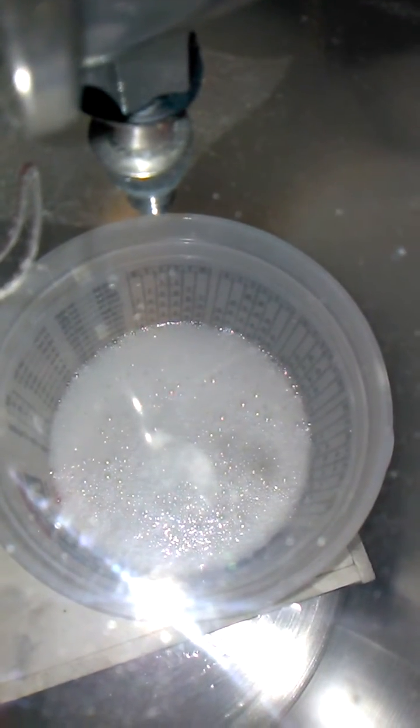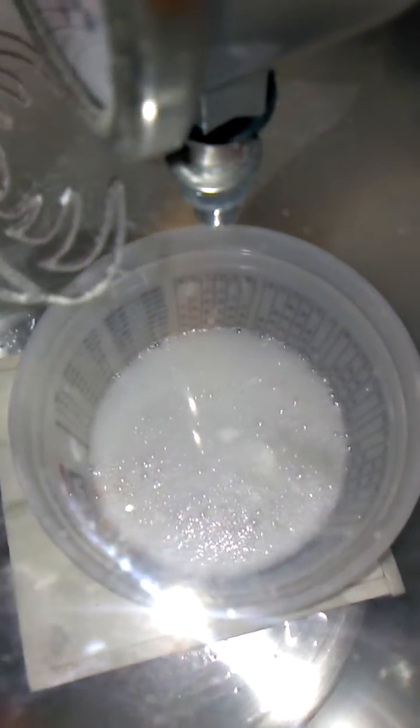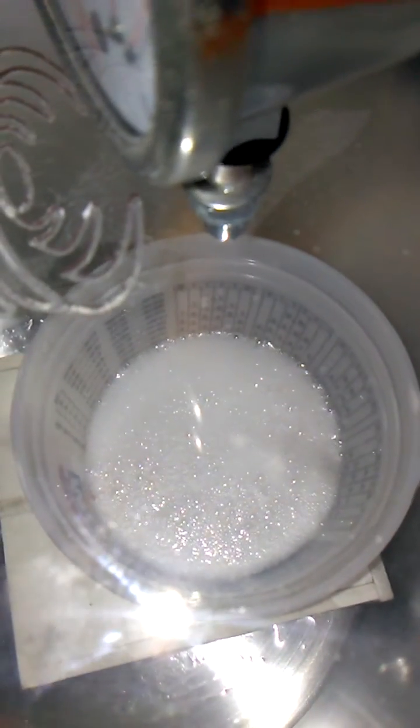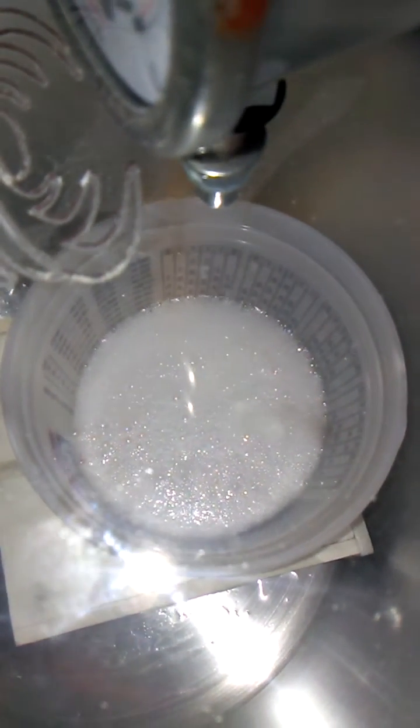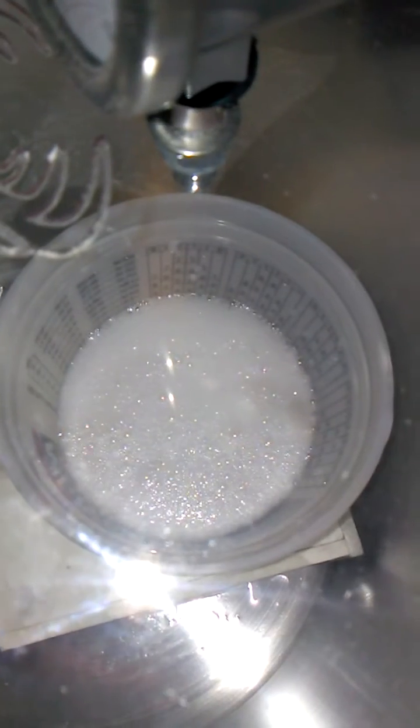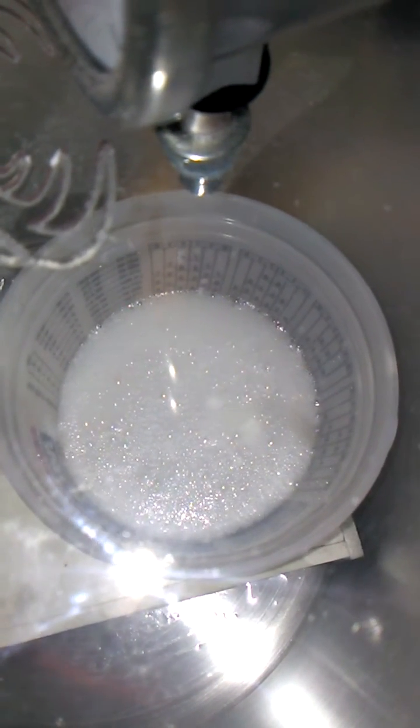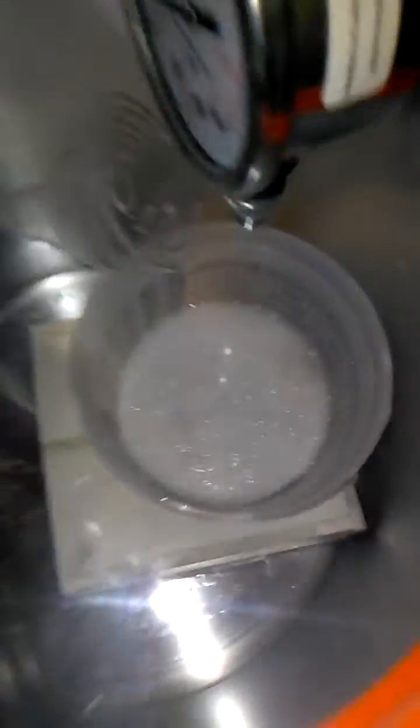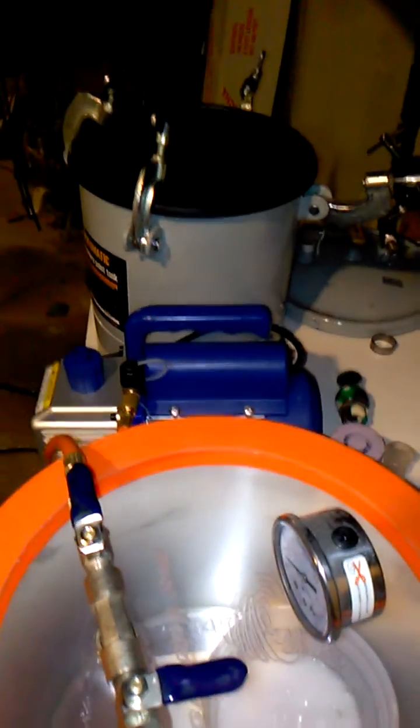Pretty amazing just how much air is in there. This is the first step when you're trying to get stuff to not have air bubbles. Before you cast it, go ahead and degas it. We degas and then we also pressure cast.